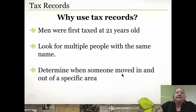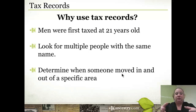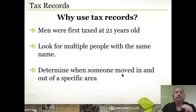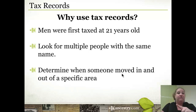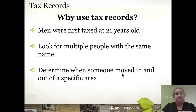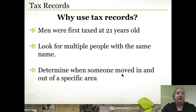Tax lists also help you determine when a person moved in and out of a specific area, or possibly even when they may have died. You're going through tax lists and you find George Lawrence year after year after year, and then all of a sudden one year he just disappears. That tells you one of two things: either he died or he moved out of the area and sold his property. You then need to look for death records in that specific time and place, or property records to see if he sold and moved on.